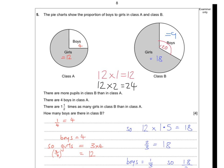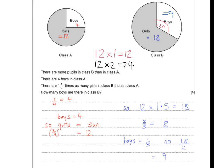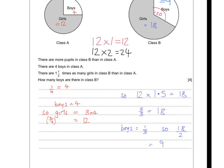To summarise the workings: one quarter equals 4, so three quarters equals 12 girls. Then 12 times 1.5 gives 18 girls in class B. That is two thirds of class B, so two thirds equals 18; therefore one third must be half of that, which is 9 boys altogether.